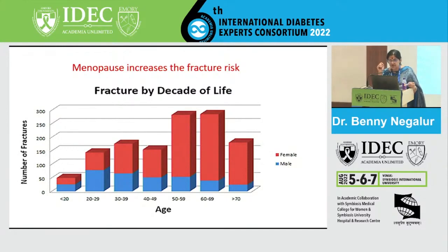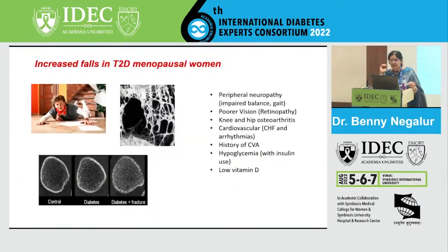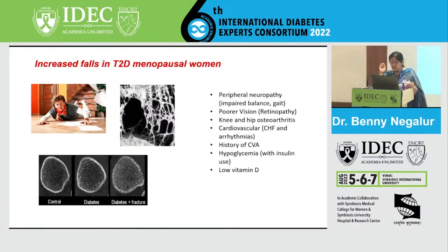Women are at double the risk of cardiovascular disease, stroke, and other metabolic complications. Fracture risk also increases in women after menopause — at all ages after 20, women have a higher fracture risk than men, and at menopause this risk doubles or becomes five times greater. In diabetic women, faulty bone growth, osteoporosis, trabecular and cortical bone defects combine with retinopathy, neuropathy, heart failure, arrhythmias, prior strokes, and osteoarthritis, all making them vulnerable to falls and fractures.